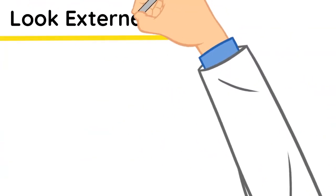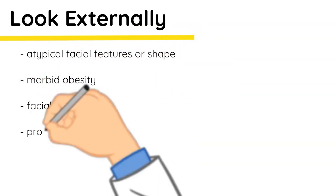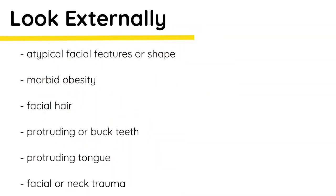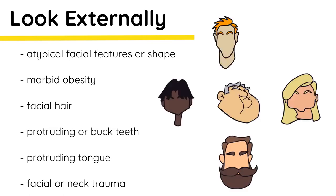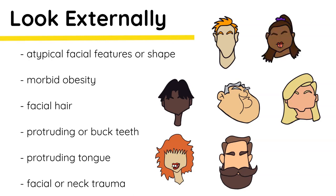Look externally for features that can make an airway difficult. Notice the following: atypical facial features or shape, morbid obesity, facial hair, protruding or buck teeth, protruding tongue, or facial and neck trauma.